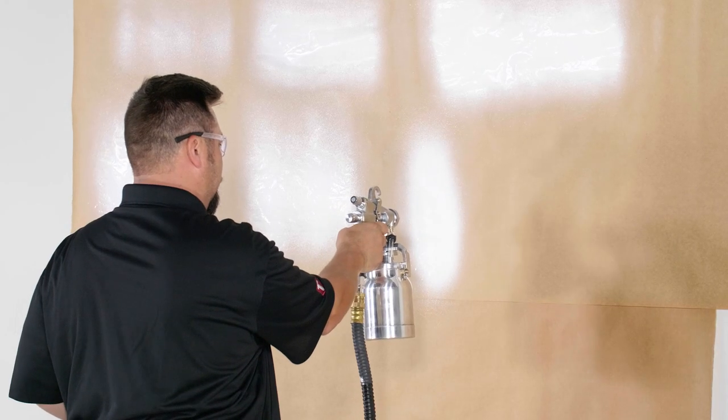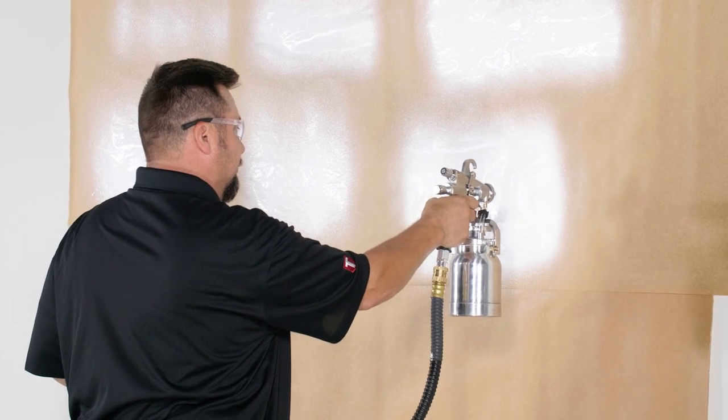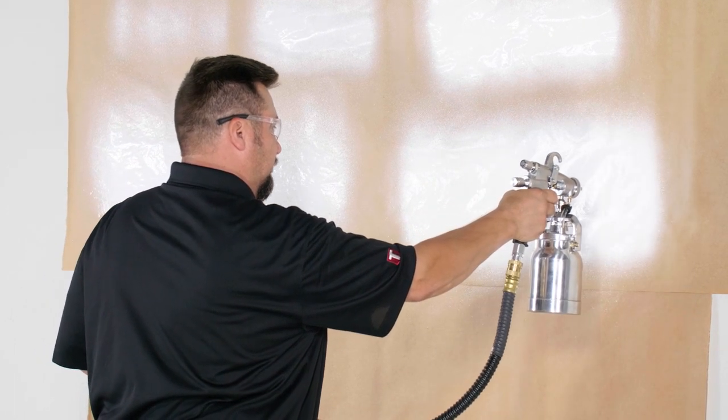Finally, here is the recommended size for this material, a number five. Notice how it is spraying clean without any spits and in this case the material did not need to be thinned. It is also important to not over-paint which can cause runs and bad finishes.